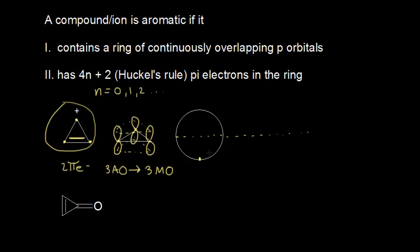We always start at the bottom of our frost circle and inscribe a polygon to match the number of atoms in the ring. In this case I have a three-membered ring, so I'm going to inscribe a triangle into my frost circle. Where the polygon intersects with the frost circle represents the energy level of the molecular orbitals. I have a total of 3 molecular orbitals: 1 molecular orbital below the line, which is my bonding molecular orbital, and 2 antibonding molecular orbitals above the line.